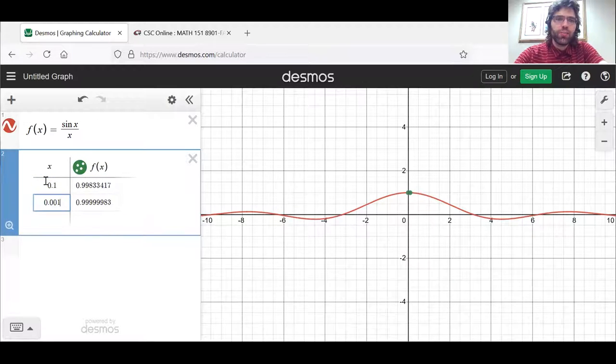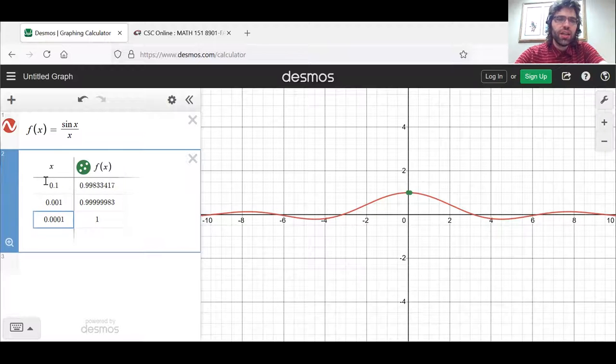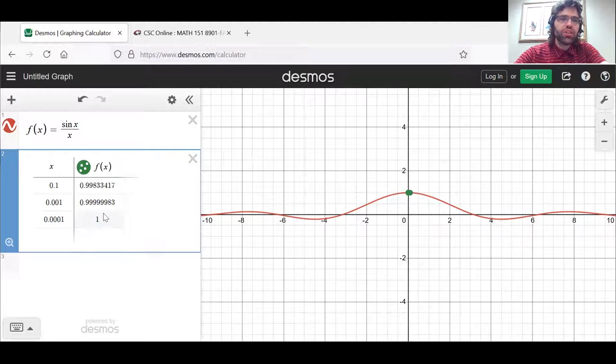And if we create a table, it certainly seems to be true. This isn't actually a one here. It's just so close to one that Desmos is rounding it.